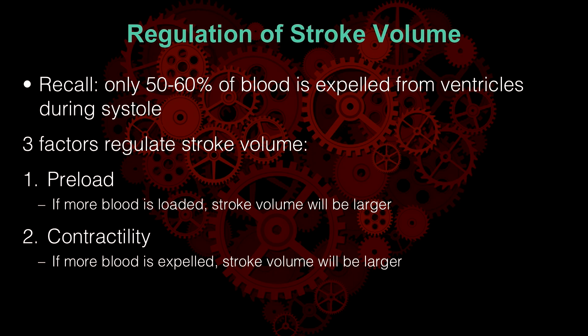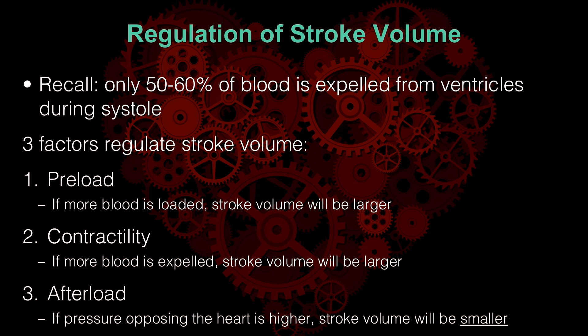Those are the two easiest concepts of the three. The last one is a little bit trickier — it's called afterload, and the name doesn't really indicate what it means. Afterload is the pressure opposing flow. If the pressure opposing flow is higher, stroke volume will be smaller. So what pressure opposes flow? If you're at the heart and you want to eject blood, what pressure is opposing cardiac output?